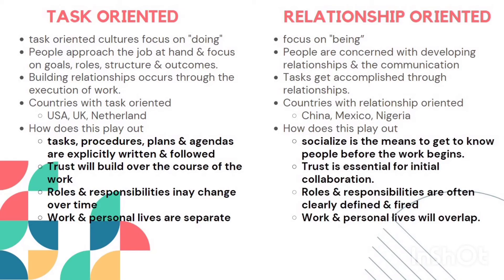In relationship-oriented cultures, socializing is the means to get to know people before work begins. People leverage existing relationships — colleagues or friends already in the team — to secure positions or collaborations. Trust is essential for initial collaboration. Roles and responsibilities are often clearly defined, but work and personal lives overlap without a clear boundary between them.